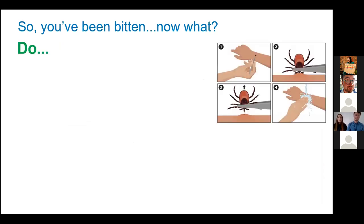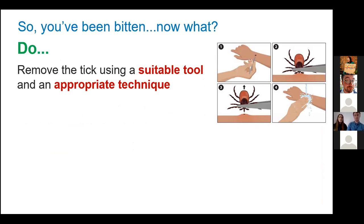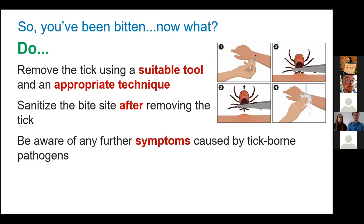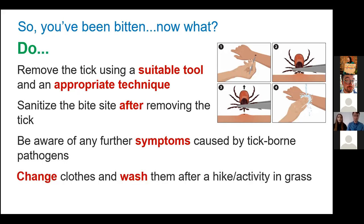On to the dos: do make sure that you remove a tick using a suitable tool and an appropriate technique. There are lots of tools available now, and we'll show you a couple on the next slide. When we say appropriate technique, we mean grabbing as close to the head as possible and gently pulling in one direction — not jamming it about and not being too rough, because you don't want to risk detaching the head from the body. Once you've removed the tick, that's the time to sanitise and make sure everything is clean and safe. Make sure you're checking and feeling okay, and if for any reason you're starting to feel unwell after a tick bite, go to the doctor. Change your clothes and wash them after a hike in case the tick that bit you brought any friends along. If you do get bitten, quite a few vets and doctors now recommend taking a picture of the tick if you can't keep it in a sealed container, so that if you do feel ill, they can try to identify the tick, which will narrow down the possibilities of what it was carrying.